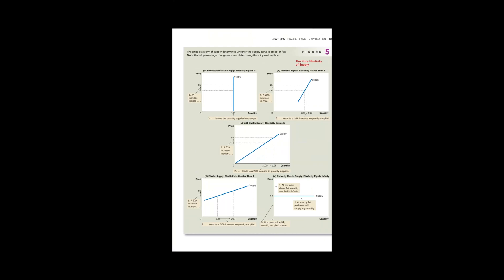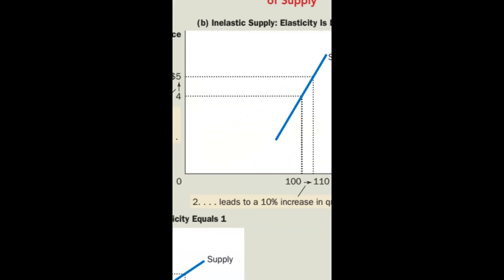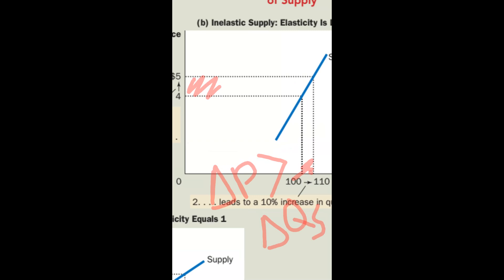When the supply curve is very steep, the change in price (ΔP) is higher than the change in quantity supplied. This is called inelastic supply. When the change in quantity supplied is lower than the change in price, the supply is inelastic.